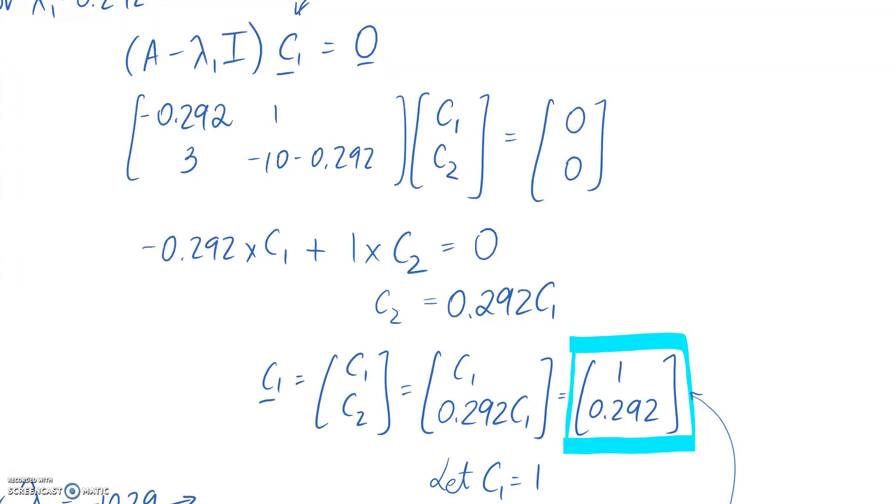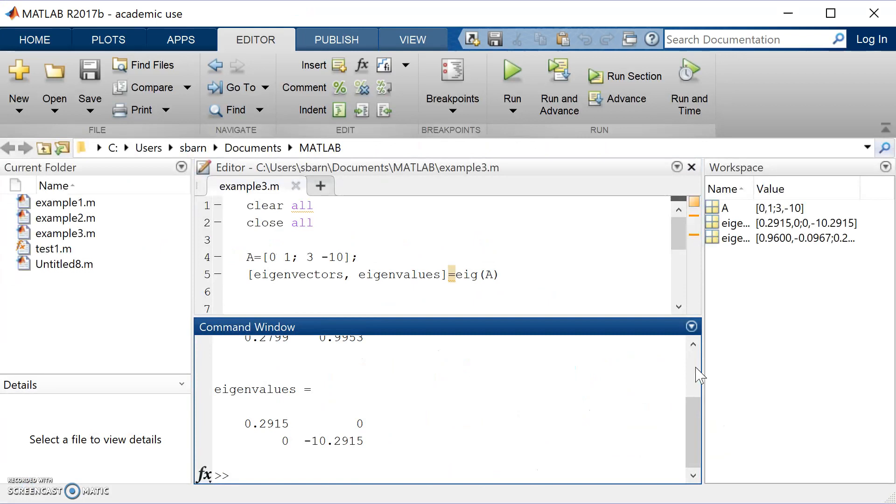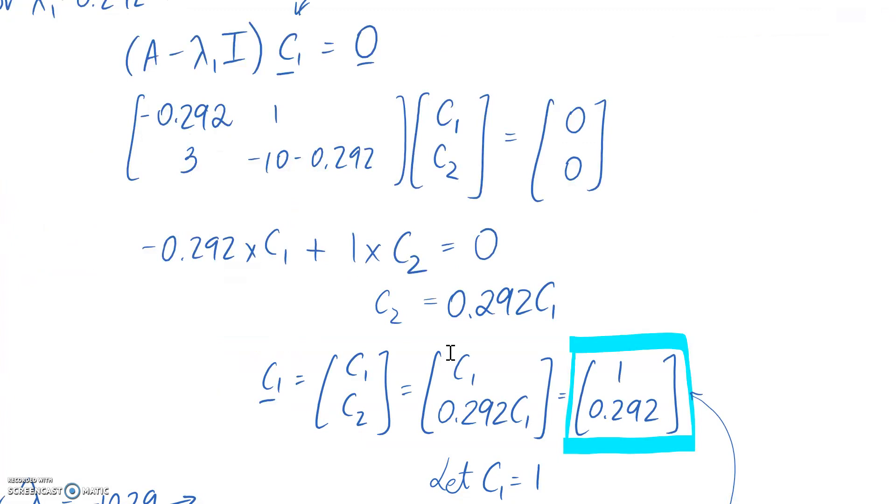Now if you jump over to MATLAB, what you're going to find is that the first eigenvector, so this is the one associated with the first eigenvalue, is not the same as what we have. And the reason for this is we had to pick a value for C1, and in our case we picked that C1 was equal to 1.